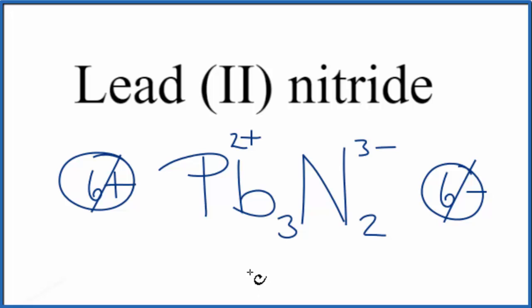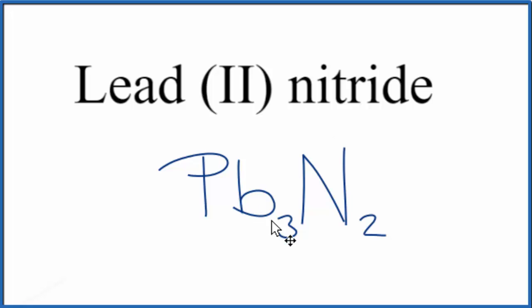The net charge is zero, so this is the correct formula for lead two nitride. This is Dr. B with the formula for lead two nitride, Pb3N2. Thanks for watching.